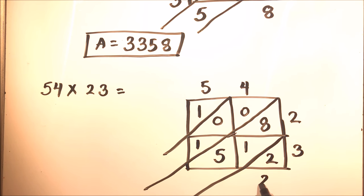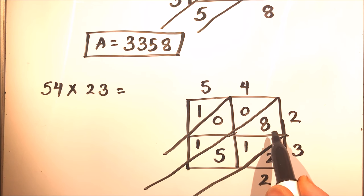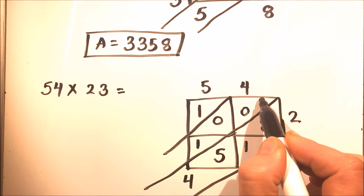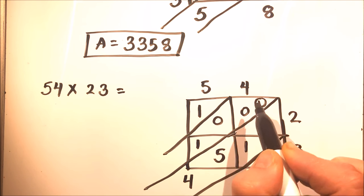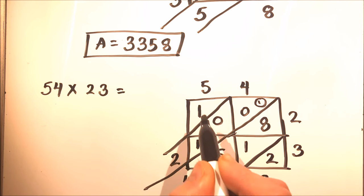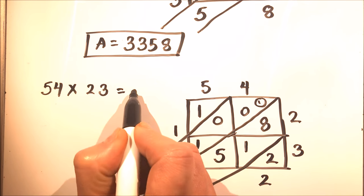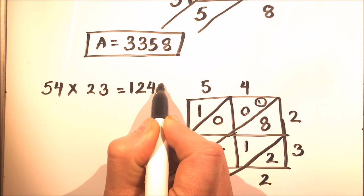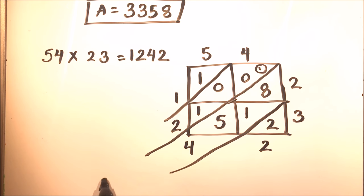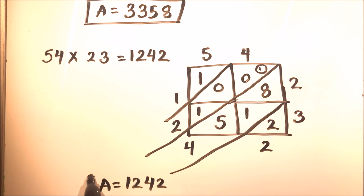Now we add the diagonals: the first is two, the next is five plus one plus eight which is fourteen — write four and carry one. Then one plus zero plus zero plus zero plus one equals two. And this is one. So the answer is one two four two — 1242. This is how we do lattice multiplication of a two-digit number by a two-digit number. Thanks for watching.